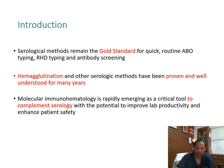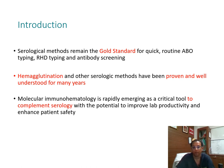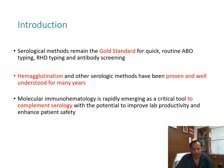Serological methods have remained the gold standard for quick routine ABO typing, RhD typing, and antibody screening. We have been relying on hemagglutination and other serological methods that have been proven and well understood for many years. Molecular immunohematology is a rapidly emerging tool and a critical tool to complement serology — not replace it.